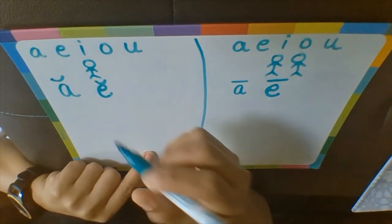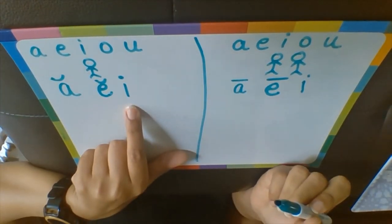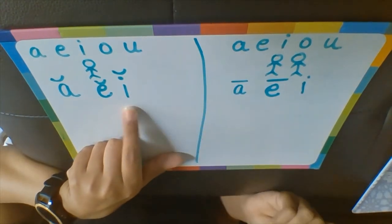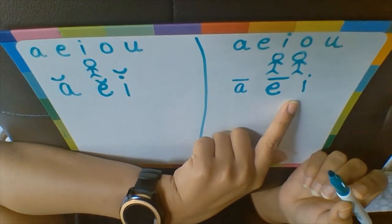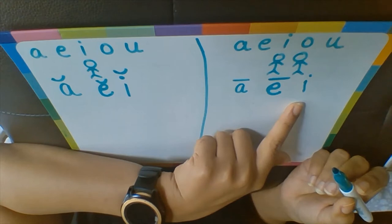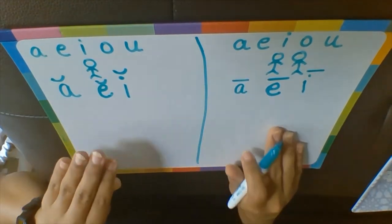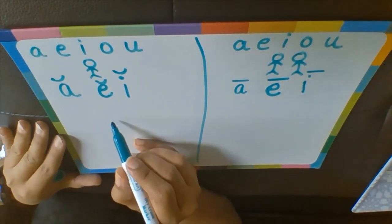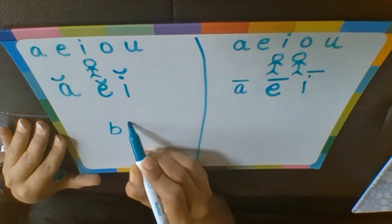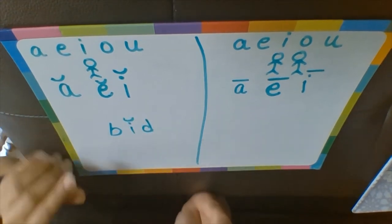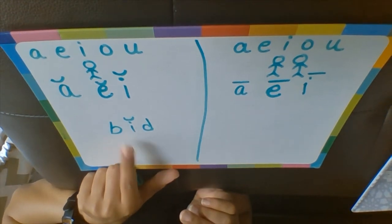Next is I. Short I says the phonic sound /ɪ/. Long I is loud and excited — it says I, the alphabet sound. Let's try a word: BID — B-I-D. The I is alone here, so it says the phonic sound /ɪ/: BID.